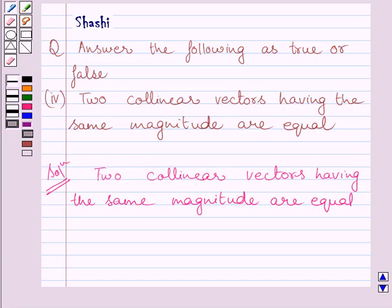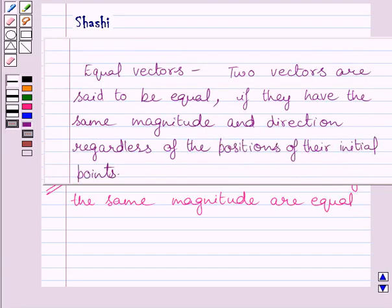Now let us understand what are equal vectors. Two vectors are said to be equal if they have the same magnitude and direction, regardless of the positions of their initial points.